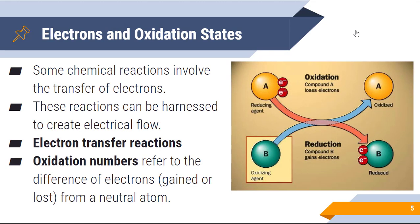So when we talk about electrons and oxidation states, it's important to understand that some reactions involve the transfer of electrons from one thing to another. In fact, most chemical reactions do. These reactions, interestingly enough, can be harnessed to create electrical flow — that's actually how a battery works. We'll talk a little bit about how we harness the energy of a battery in a unit later on. These are known as electron transfer reactions.